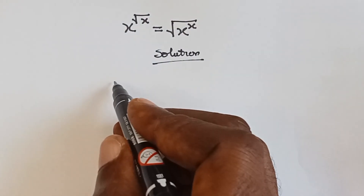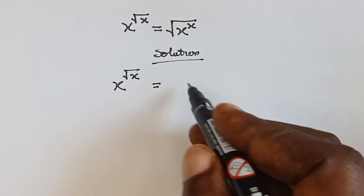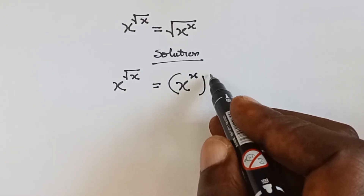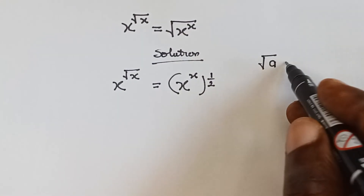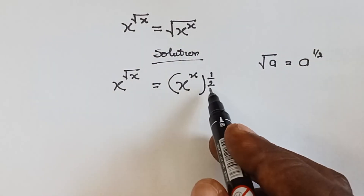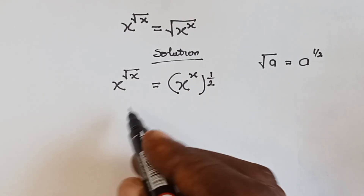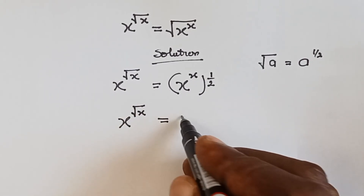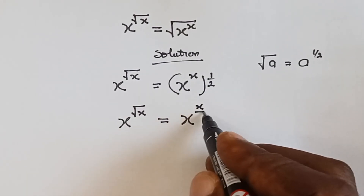We have x raised to the power root x. Another way to write this is x raised to the power x, then raised to the power 1 over 2, because we know that the square root of a is the same as a raised to the power 1 over 2. So we can multiply the powers: x raised to the power root x equals x raised to the power x times 1 over 2, which is the same as x over 2.